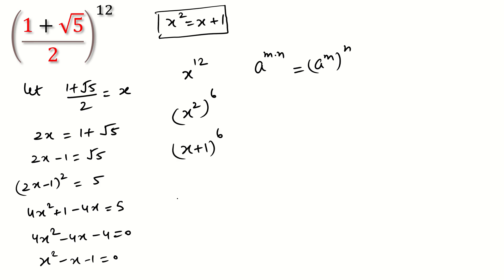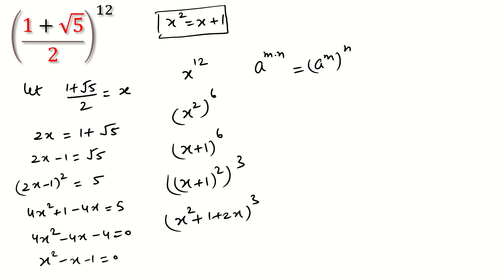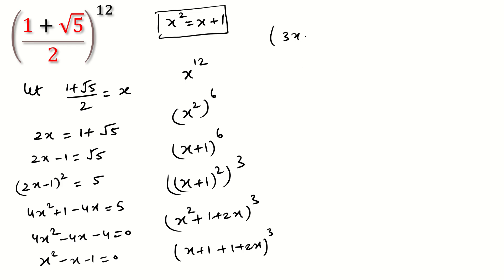Apply the power rule again to write (x + 1)^6 as ((x + 1)²)^3. Expanding (x + 1)² gives x² + 2x + 1, raised to the power 3. Substituting x² = x + 1, we get (x + 1 + 1 + 2x)^3 = (3x + 2)^3.